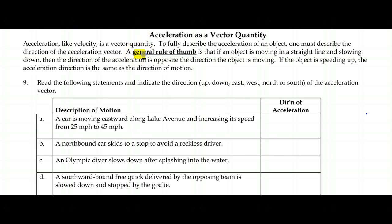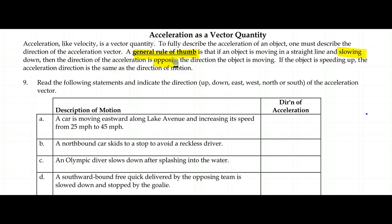There is a general rule of thumb that you can use over and over again. As long as the object is moving in a straight line, if it's slowing down — the magnitude is getting smaller — that indicates the direction of the acceleration is opposite to the direction of the motion, the velocity.